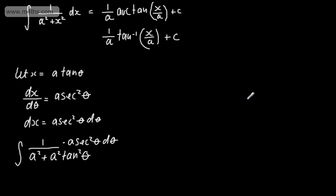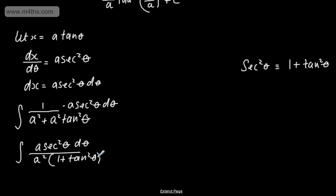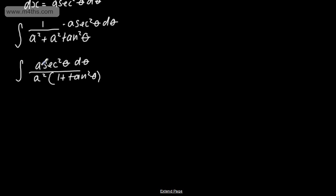Using a trig identity, we know that sec² θ will be equal to 1 plus tan² θ. If I factor the denominator of this particular fraction, we can write this now in the numerator as a sec² θ dθ over a squared, and then we'll have 1 plus tan² θ. We can see now that we can write 1 plus tan² θ as sec² θ. So we end up cancelling off — the a and the a squared will cancel — so we'll have 1 over a dθ. So we're now integrating 1 over a, where a is a constant with respect to θ, and this is going to give me 1 over a θ plus a constant of integration.